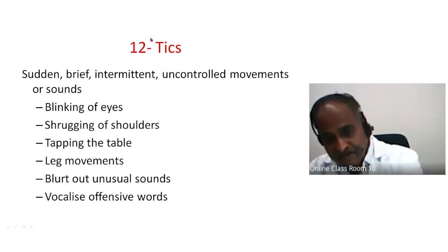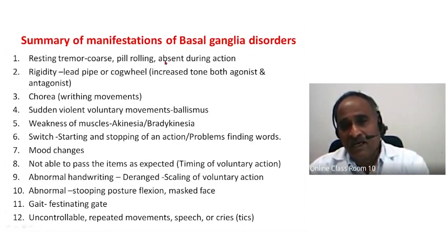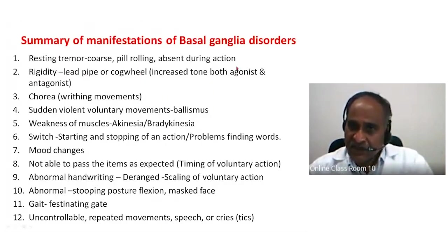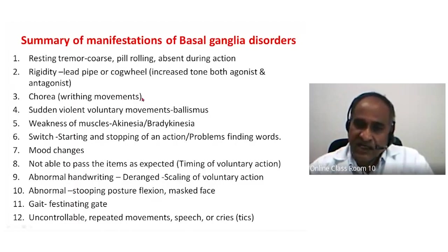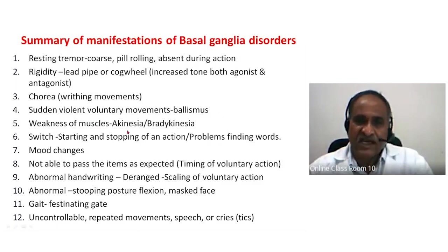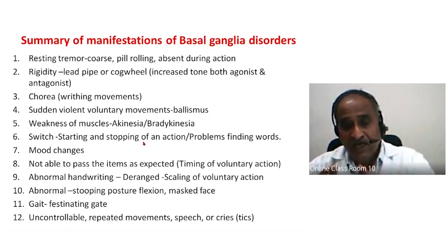In summary, the manifestations of basal ganglia disorders: resting tremor — coarse, pill-rolling, present at rest, abolished during action. Rigidity — lead pipe or cogwheel type, due to contraction of both agonist and antagonist muscles. Chorea — writhing movements and intermittent violent motions. Sudden violent movements — weakness of muscles — akinesia or bradykinesia — difficulty starting or stopping actions.